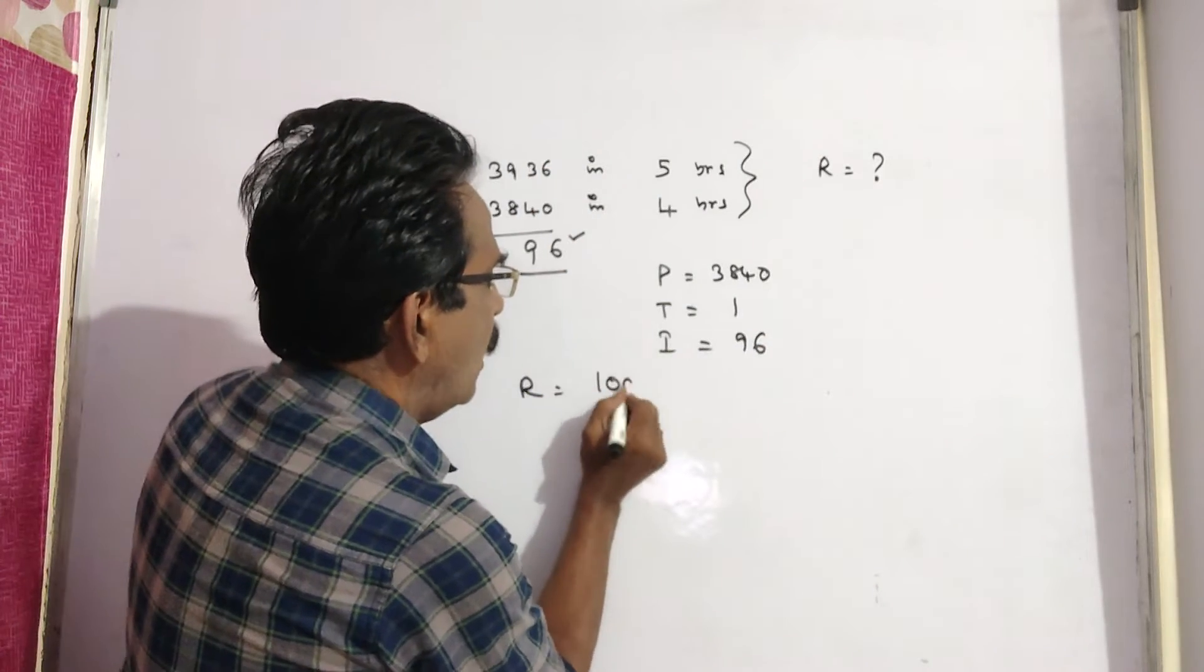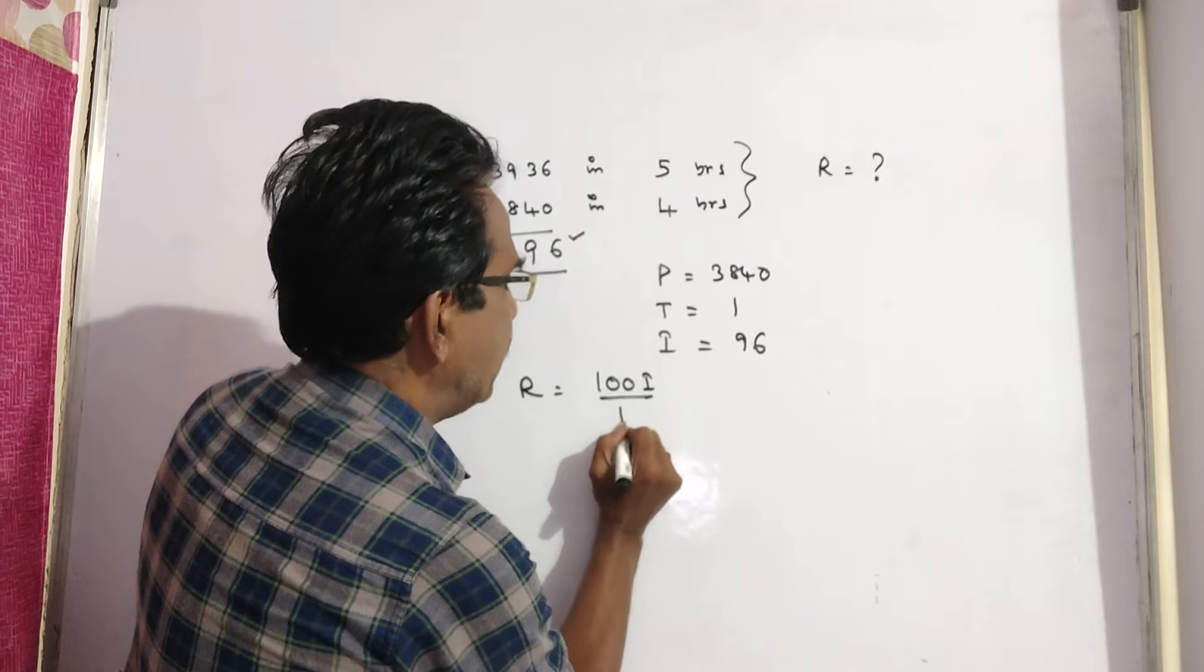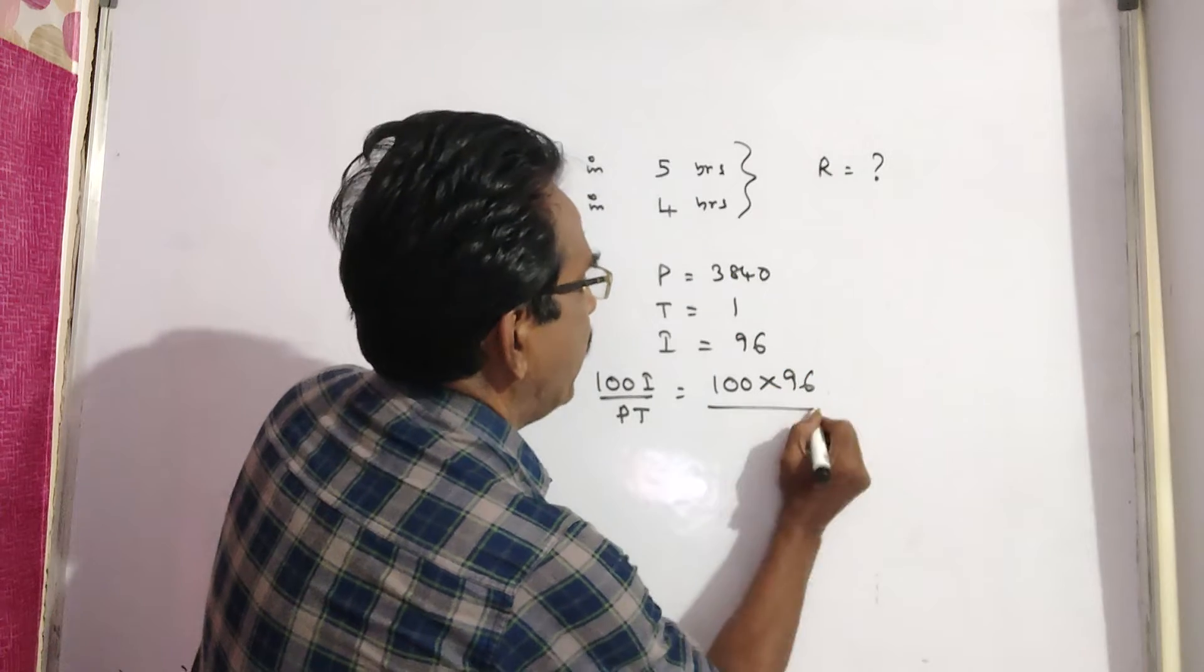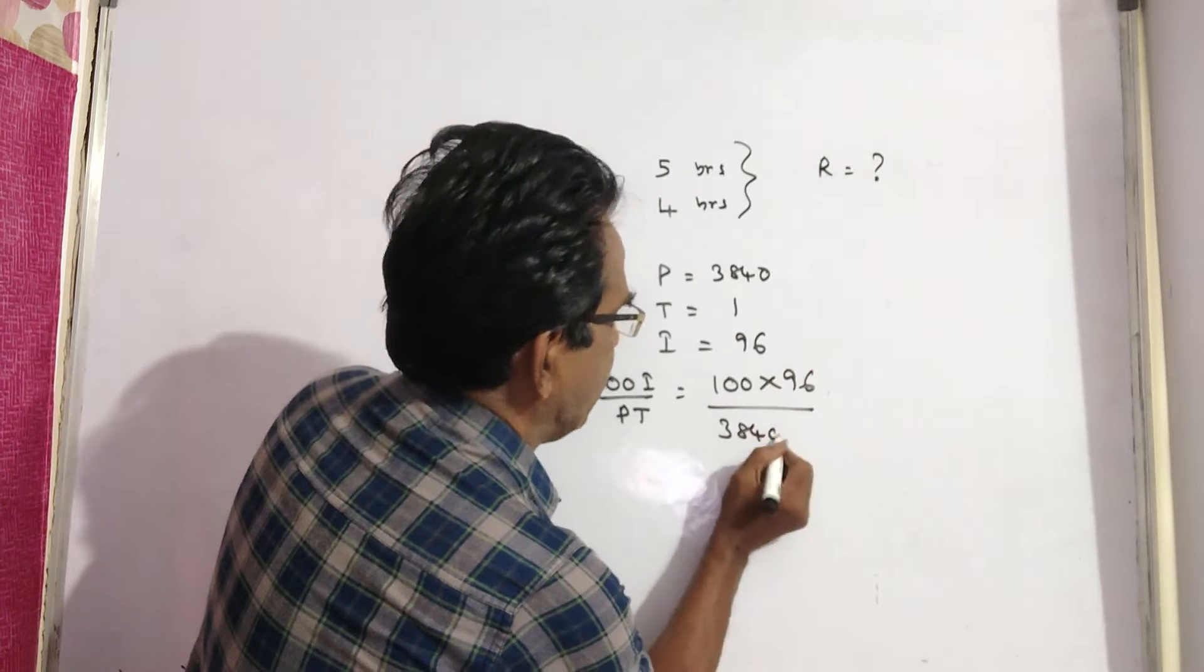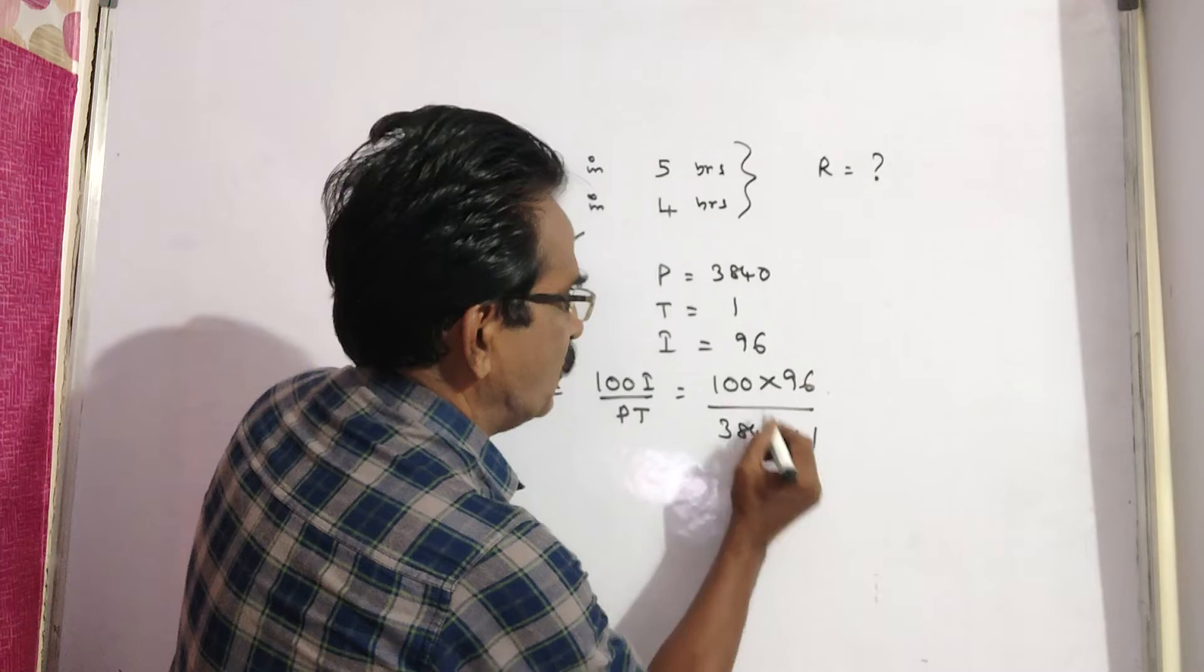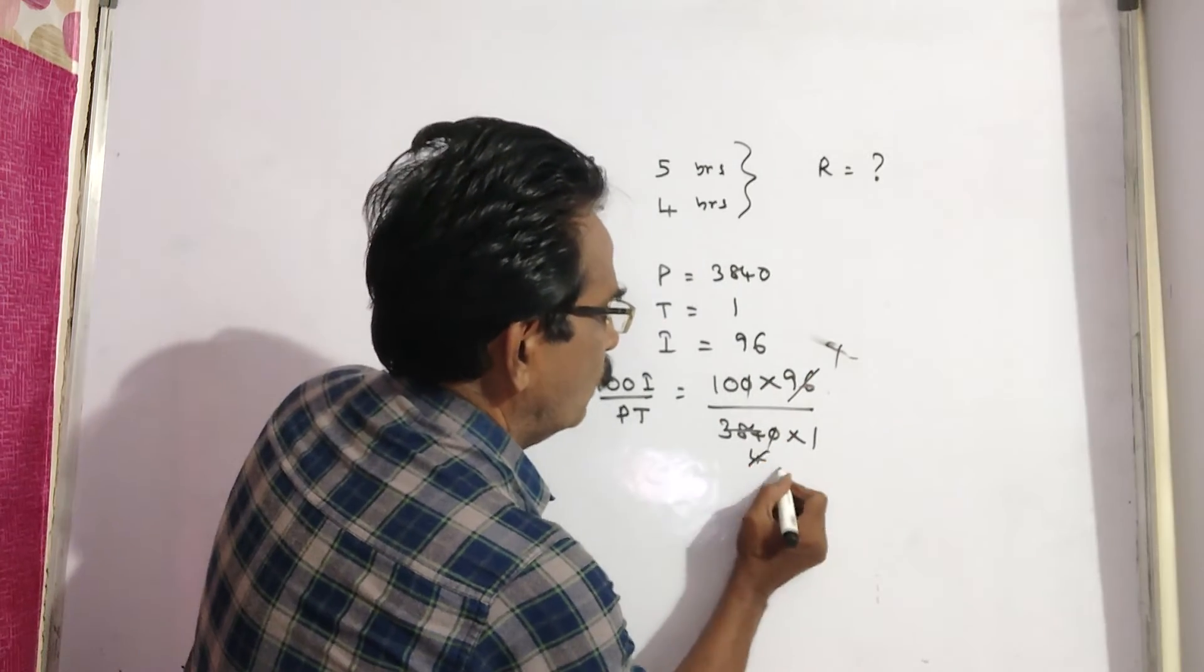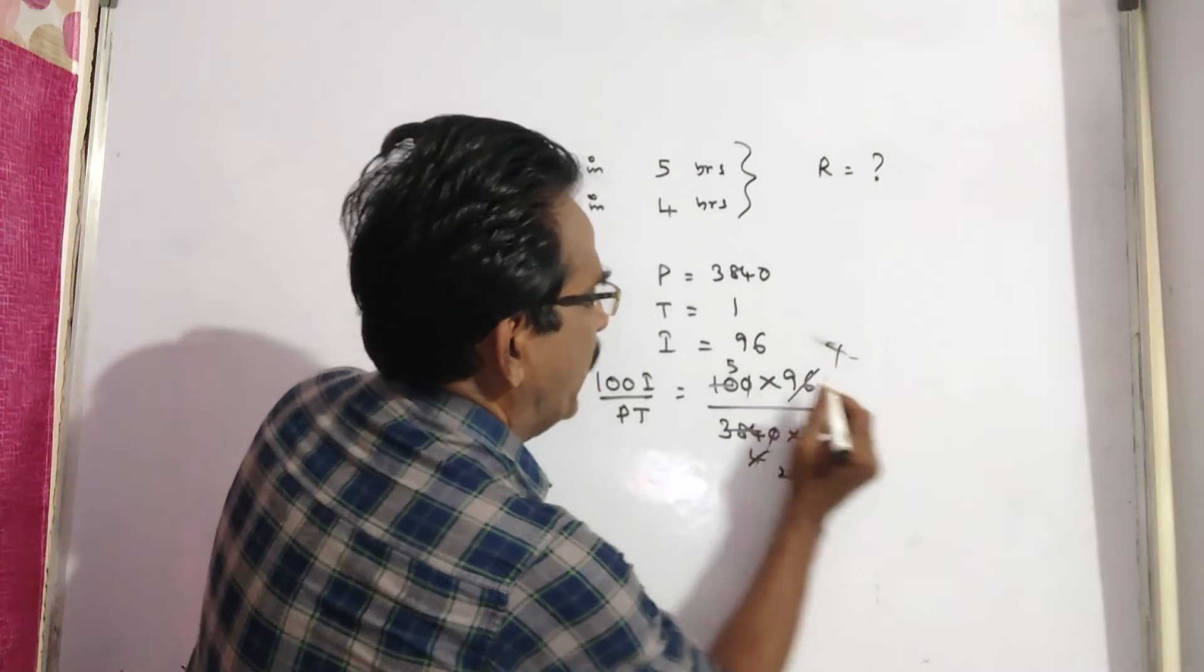R equals 100I by PT. That is, 100 times 96 divided by 3840 times 1. Canceling the common factors: 96 by 4, by 4, by 2, by 2, giving us 5 by 2.